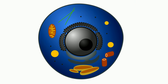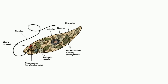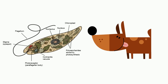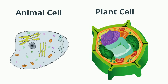Eukaryotic cells do contain membrane-bound organelles like a nucleus, mitochondria, or a Golgi apparatus. Eukaryotic means 'true kernel,' which refers to the true nucleus. They can either be a single-cell organism like a protist or a multicellular organism like a dog or tree. Some eukaryotic cells are animal cells, which do not have a cell wall, or they can be plant cells, which have a cell wall and chloroplasts.